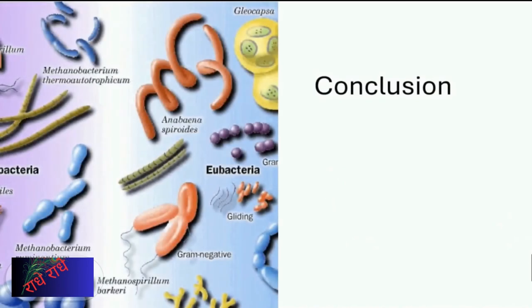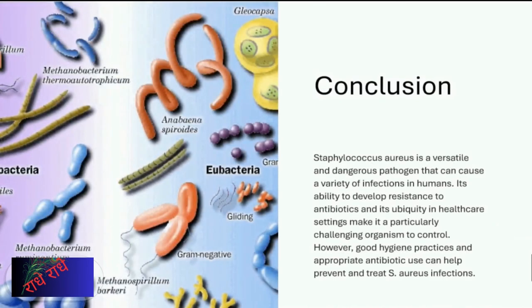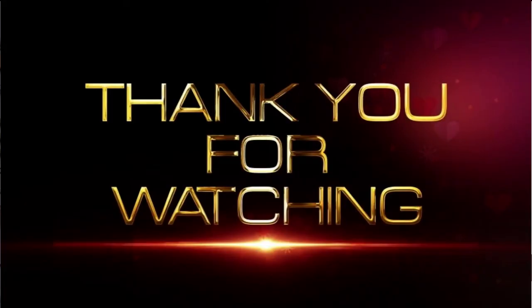Staphylococcus aureus is a serious pathogen with the potential to cause many different types of infections in humans. With the prevalence and increasing resistance of this bacteria in healthcare settings, it is crucial to take preventative measures such as good hygiene and appropriate use of antibiotics. Thank you for your attention and for joining me.